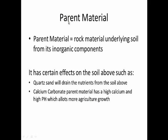Parent material is the rock material underlying the soil from its organic components. It has certain effects on the soil above — for example, coarse sand will drain the nutrients from the soil above, and calcium carbonate parent material has a high calcium and high pH which allows for more agricultural growth. In the Midwest of the United States, there is a lot of calcium carbonate, which is helpful for agricultural growth.